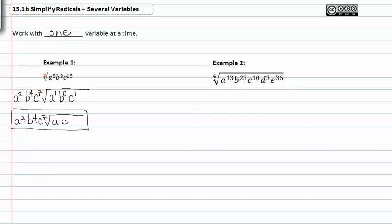In example two we have a fourth root, our index is four. And so we take each variable separately working on them one at a time starting with a to the thirteenth. Again I will rewrite the radical and work from left to right throughout all my variables. Four will go into thirteen three times with a remainder of one.